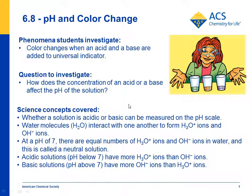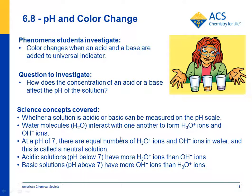The big science concepts covered are: whether a solution is acidic or basic can be measured on something called the pH scale. Water molecules interact with one another to form H3O+ ions and OH- ions, and that has a lot to do with the pH scale — the H3O+ ions.